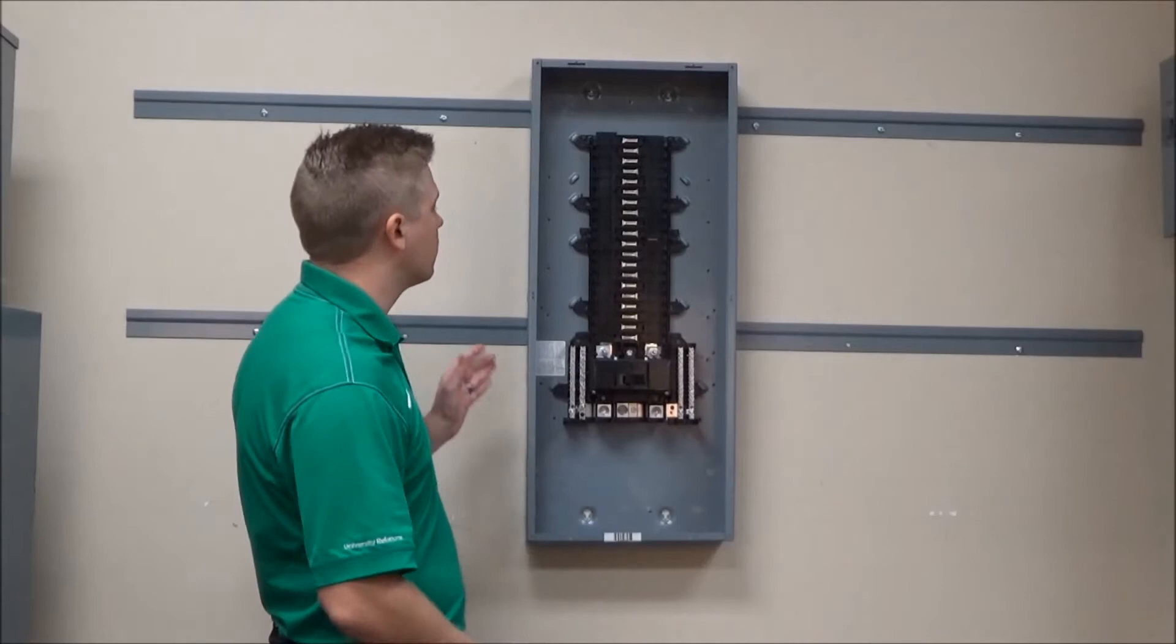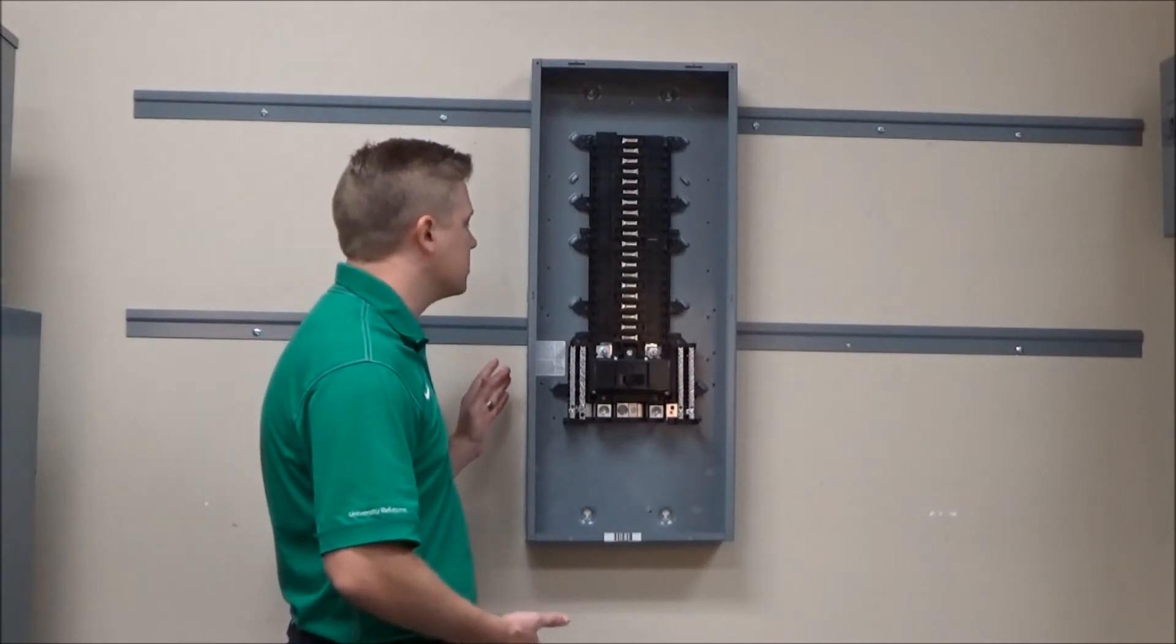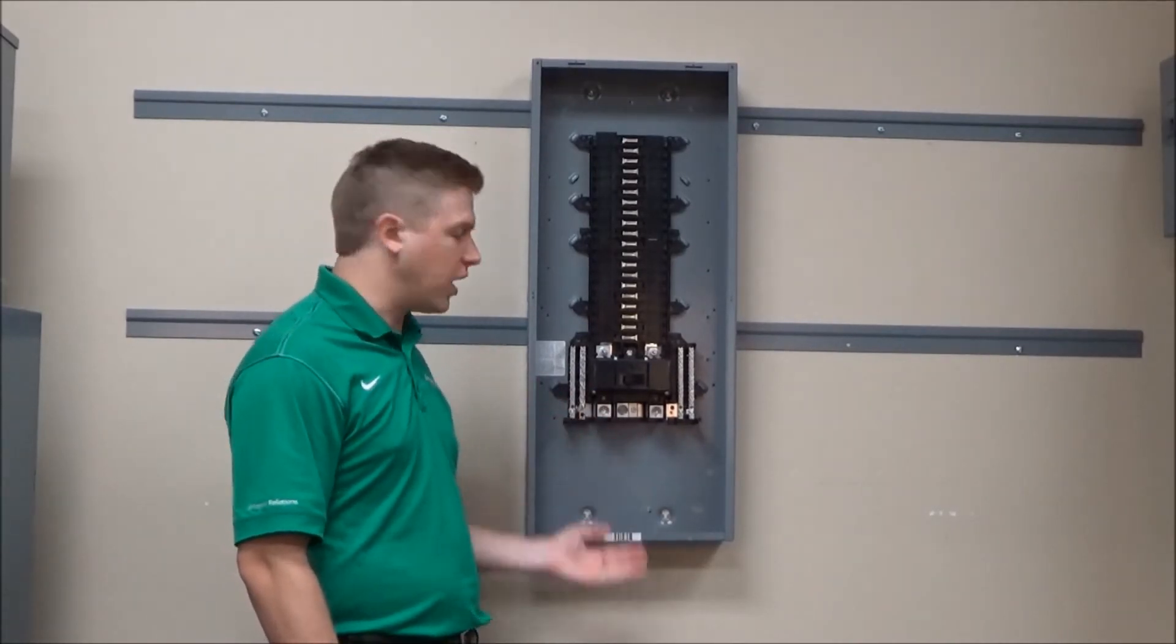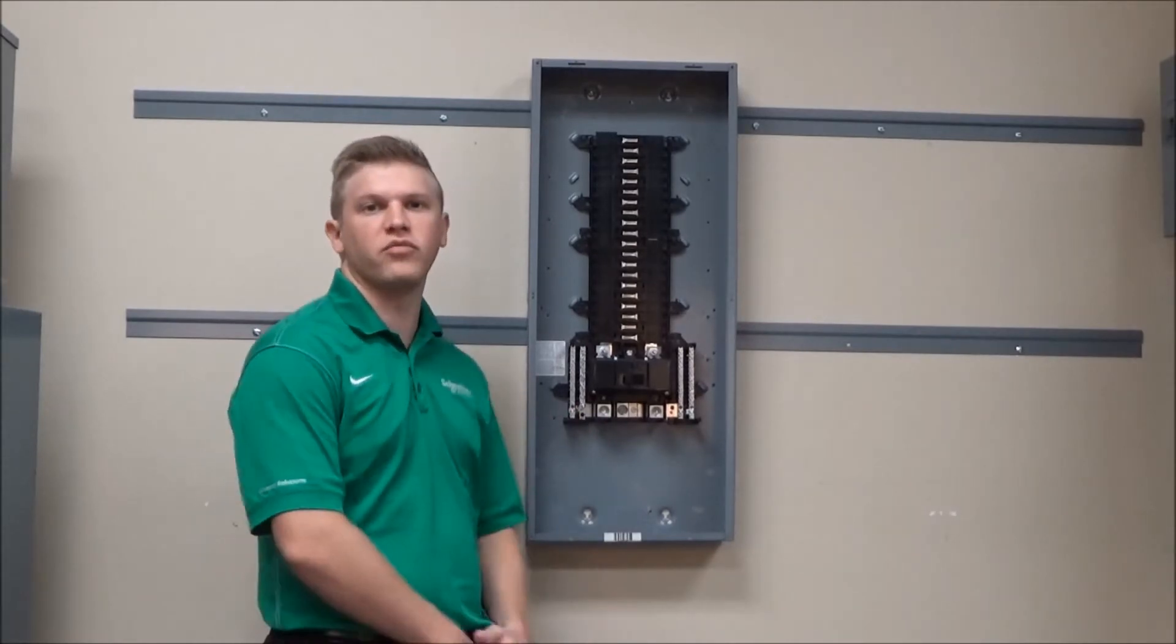Now with the load center rotated 180 degrees, you can see that the main breaker is now at the bottom so that the wires can be brought in from the bottom for underground feed.